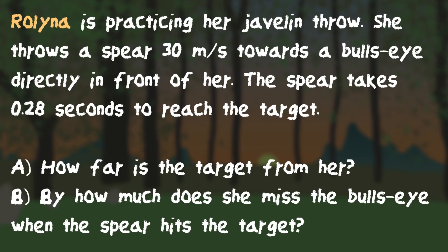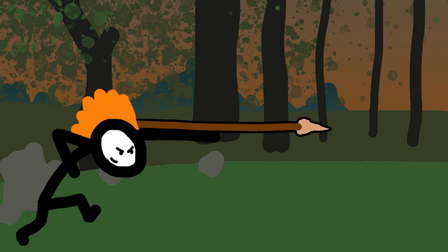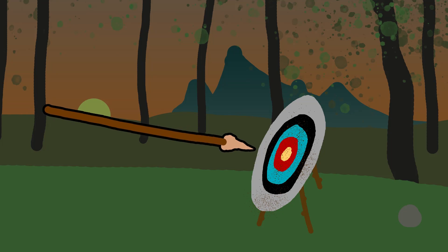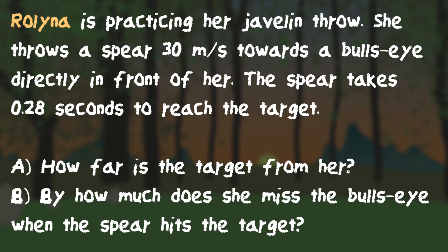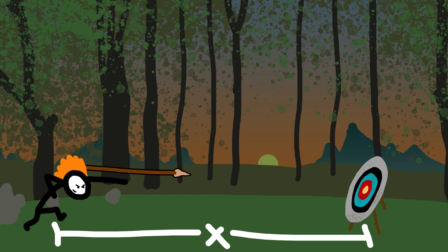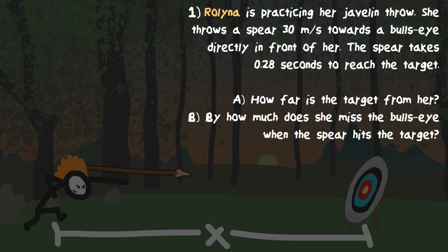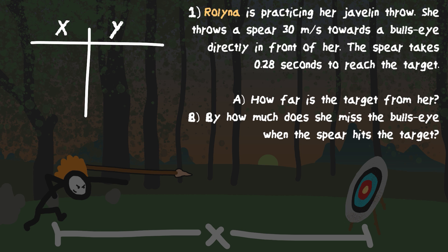Example problem number one: Rolina is practicing her javelin throw. She throws a spear at 30 meters per second towards a bullseye directly in front of her. The spear takes 0.28 seconds to reach the target. How far is the target from her? When dealing with Projectile Motion problems, we want to separate everything into the X dimension and the Y dimension. We always want to start with acceleration. Acceleration in the X direction is always zero.